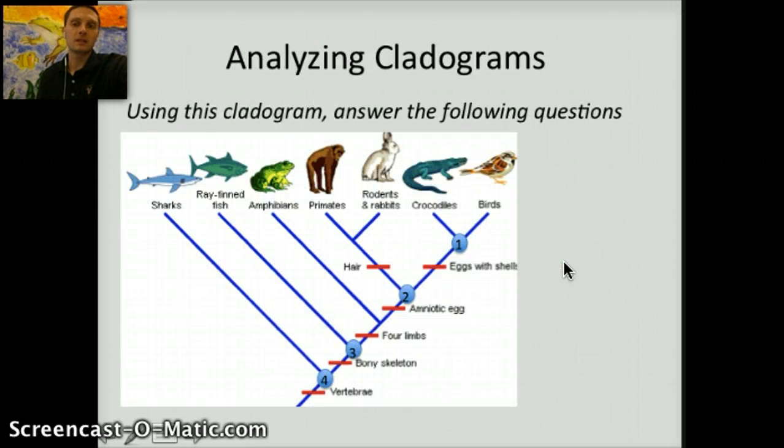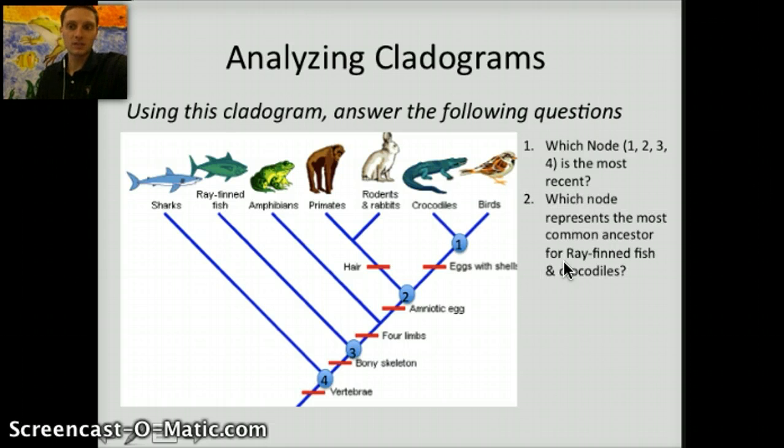To get a little bit of practice looking at this cladogram that we looked at previously, a couple of questions here for you to review. First, which node—one, two, three, or four—is the most recent? Hopefully, you were able to identify node number one as being most recent. Which node represents the most common ancestor for ray-finned fish and crocodiles? For that one, it would actually be number three, because that is where both ray-finned fish and crocodiles meet.